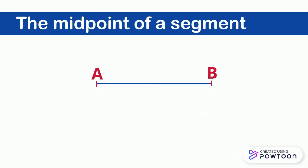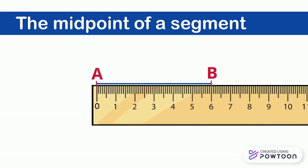We can find the half of a segment using a graduated ruler. We measure the length of the segment AB and we look for the half of this measurement.